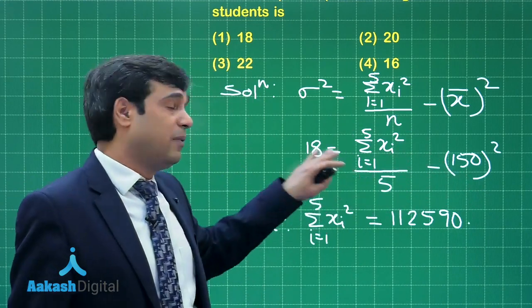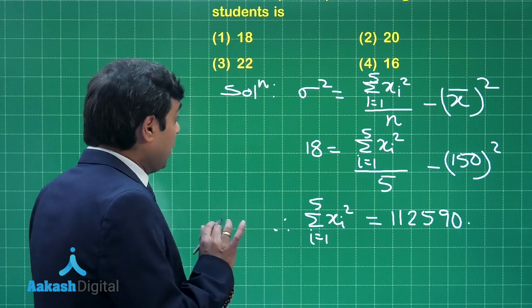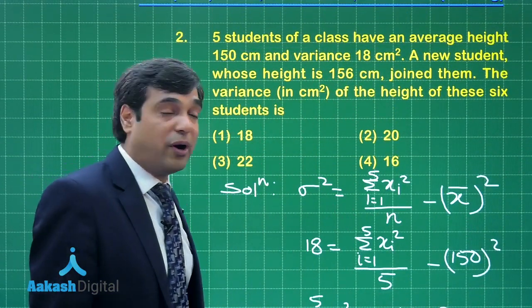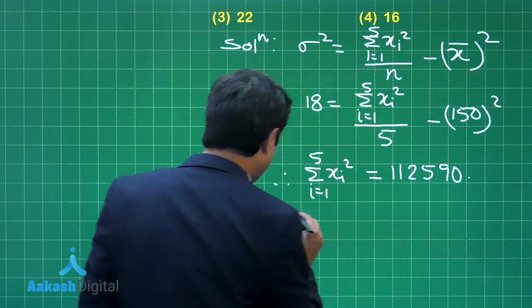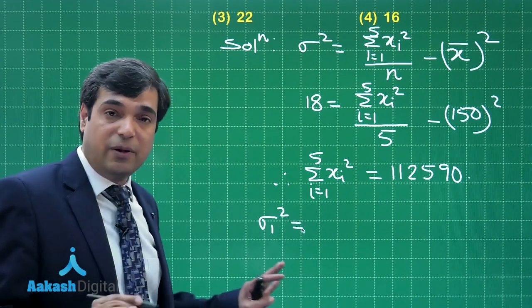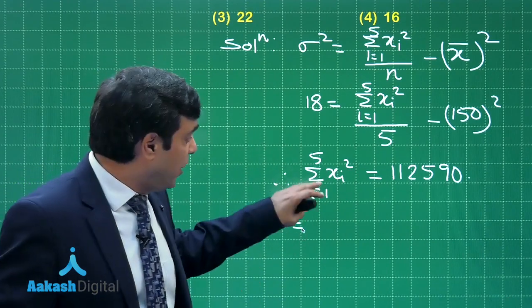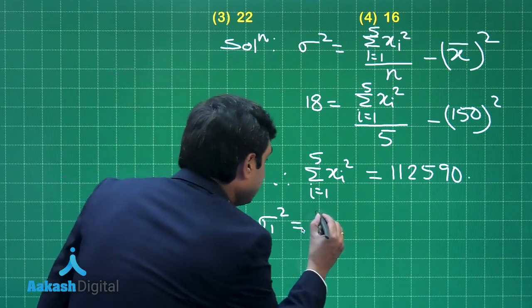Now next, it is given that another student with height 156 centimeters joins them. So let us consider this time σ₁². This will be equal to Σxi² (this time i is from 1 to 6): 1 to 5 the same result, and the sixth one is 156.